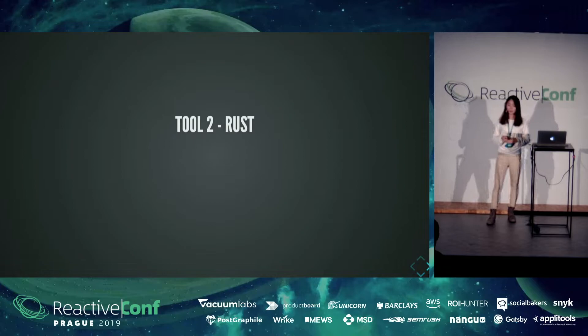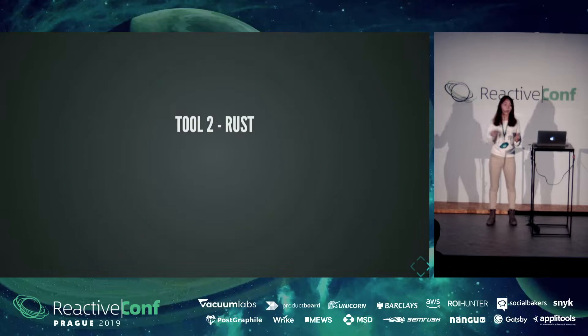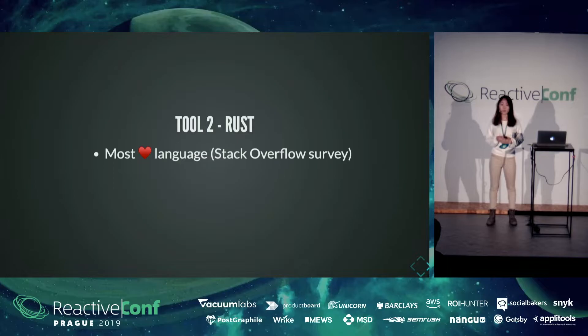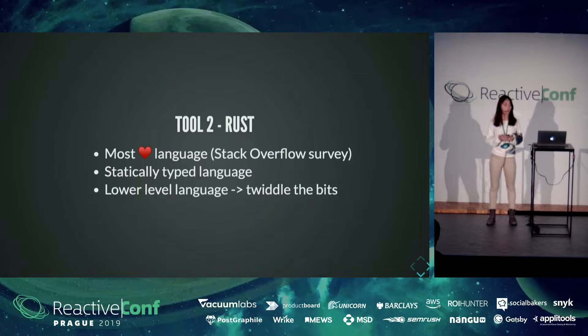All right. Our second tool: Rust. We talked about WebAssembly - it is a binary format file. And it is very rare that we would handwrite a WebAssembly file. In most cases, we will get a WebAssembly file by writing our code in another language and compile into it. Rust is one of those. Rust is listed as the most loved language on a Stack Overflow survey for two years. But most importantly, the reason I picked Rust is because it is a statically typed language. Rust is also a lower-level language that would allow me to twiddle the bits.